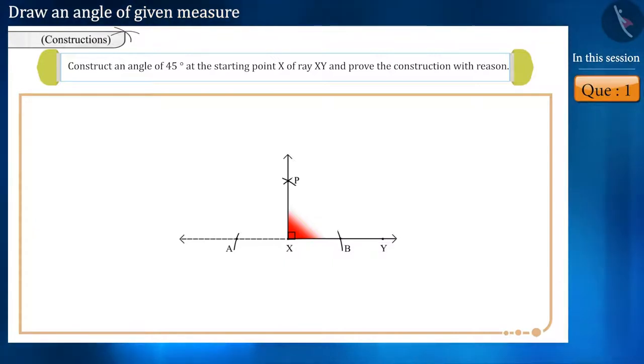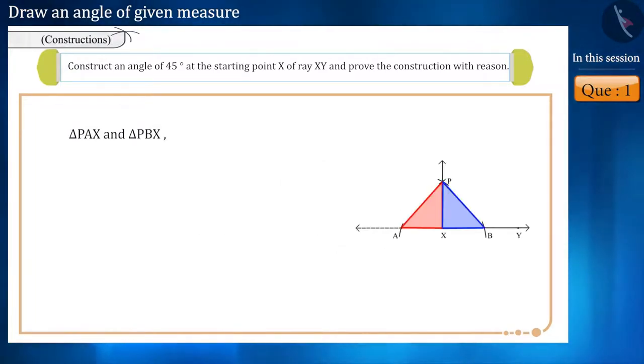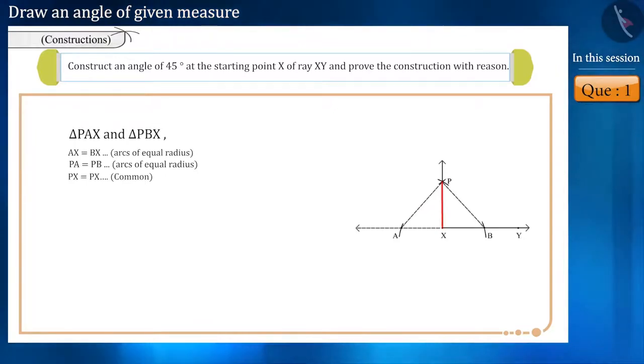Let us first check the validity of the diagram before moving forward. We will join point P to A and B. Now, in triangle PAX and triangle PBX, side AX is equal to side BX because they are arcs of equal radius. Side PX is equal to side PX because they are common sides. This is how triangle PAX and triangle PBX are congruent by side-side-side congruency rule.